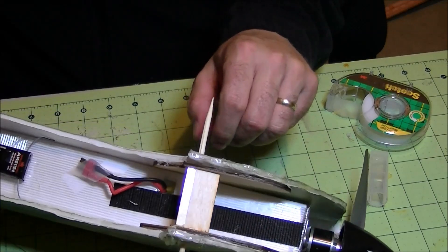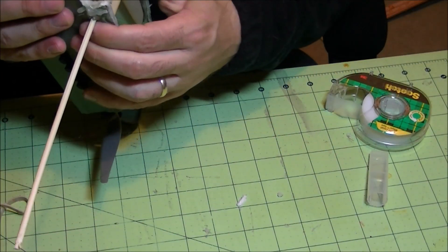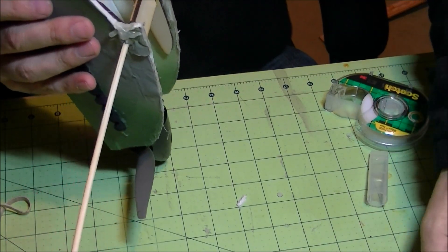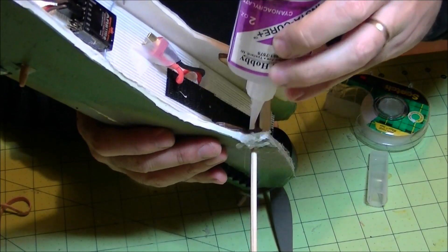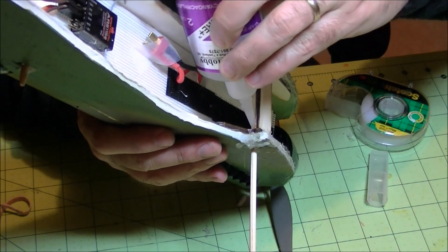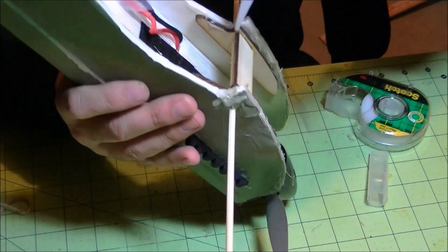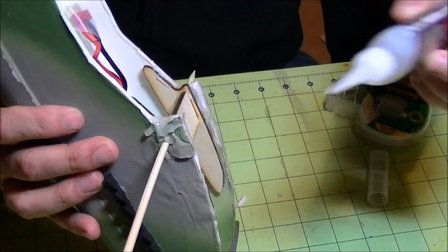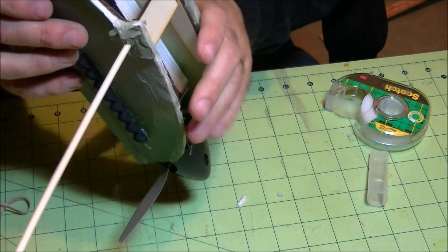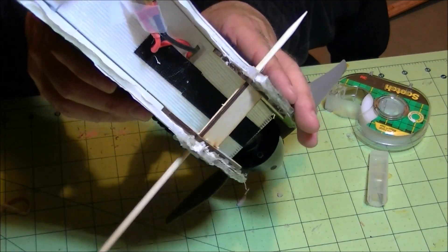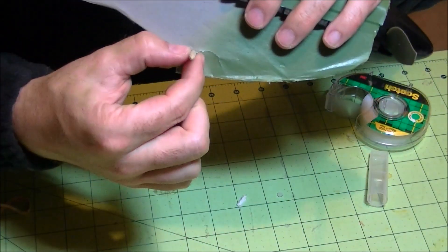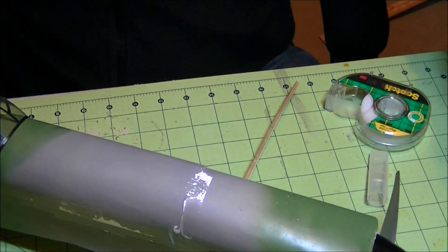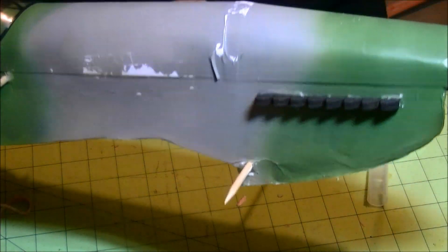So the last thing that's left to do is glue in the spar. Glue this in, put a dab in here, let that soak in, and dab in here. And when that sets up, you're all set. Just cut these down to size and you will have a completely repaired wing box.